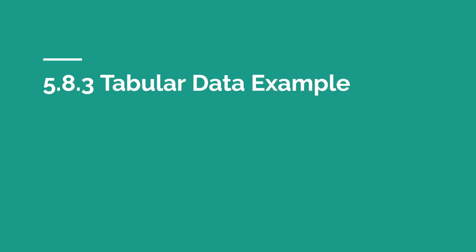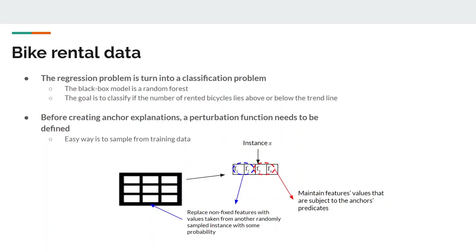Now let's see one example of tabular data. The first example uses the bike rental data. For this example, the classification problem is turned into a regression problem. And a random forest is trained as a black box model. The problem is defined as to classify whether the number of rented bicycles lies above or below the trend line.